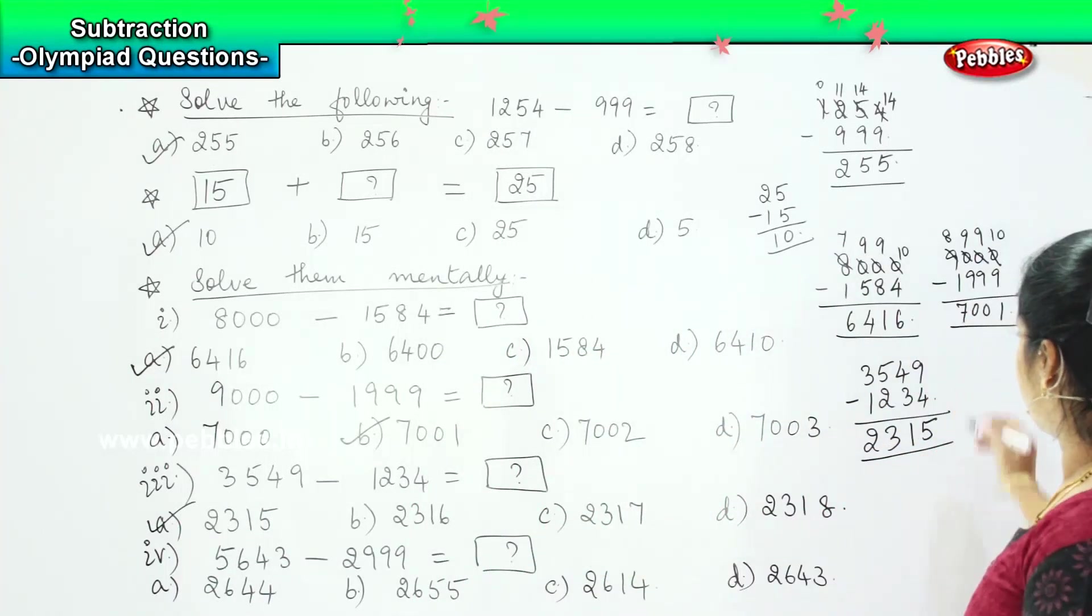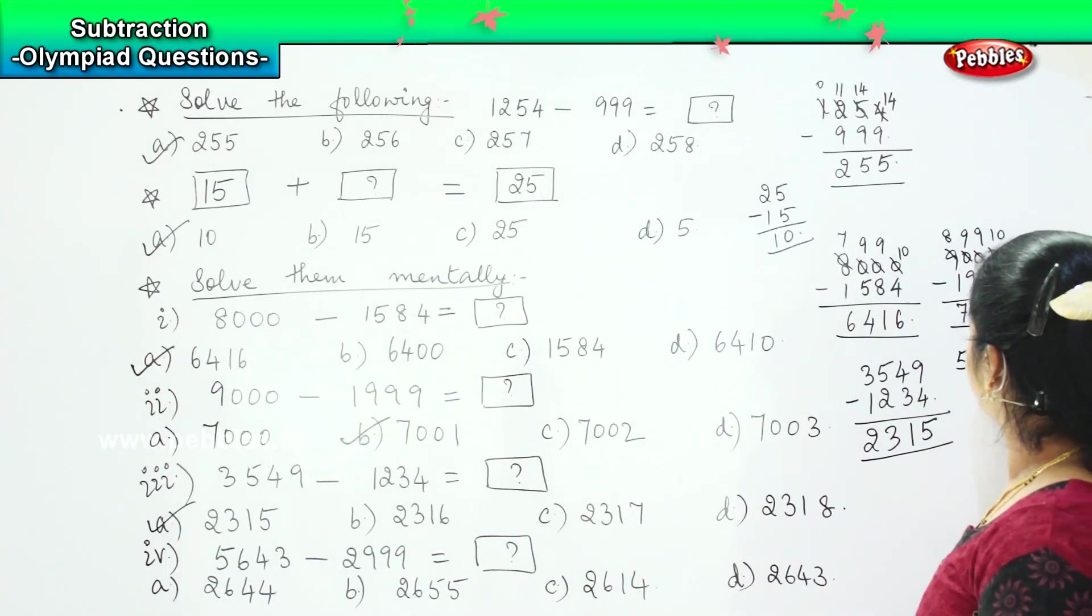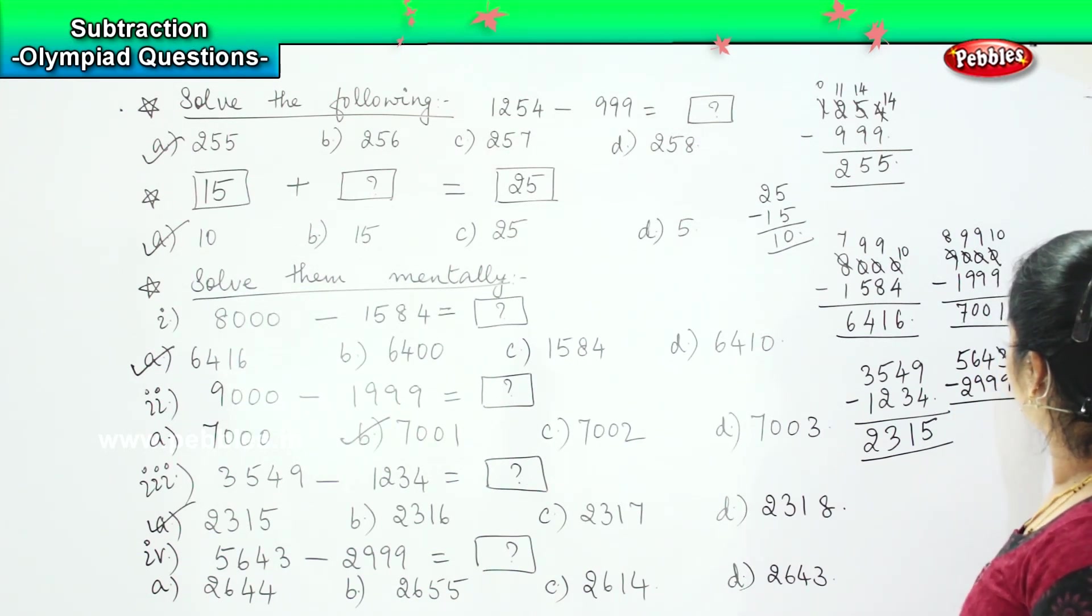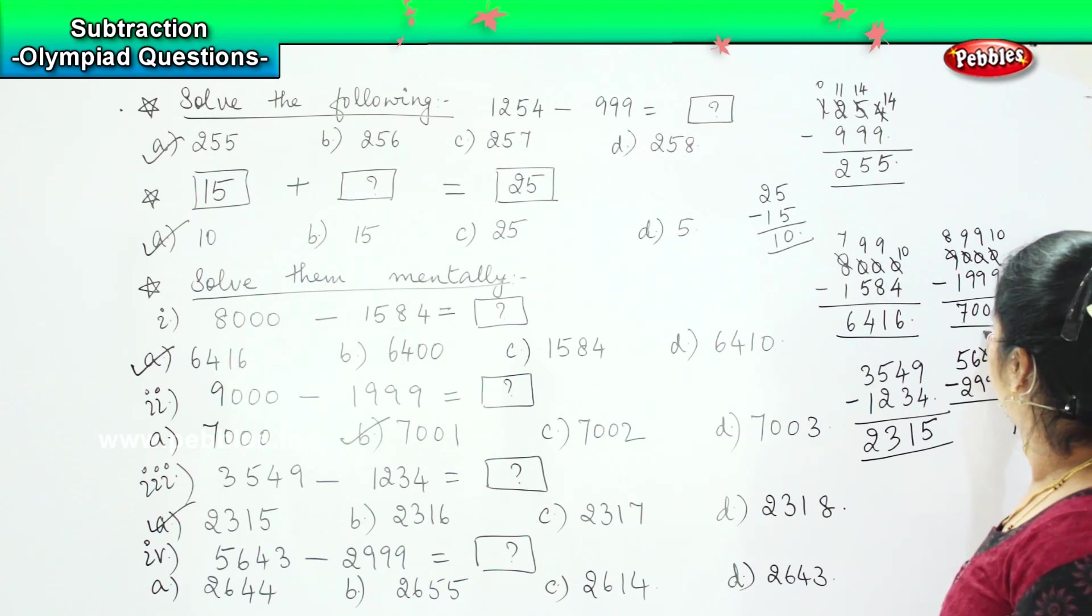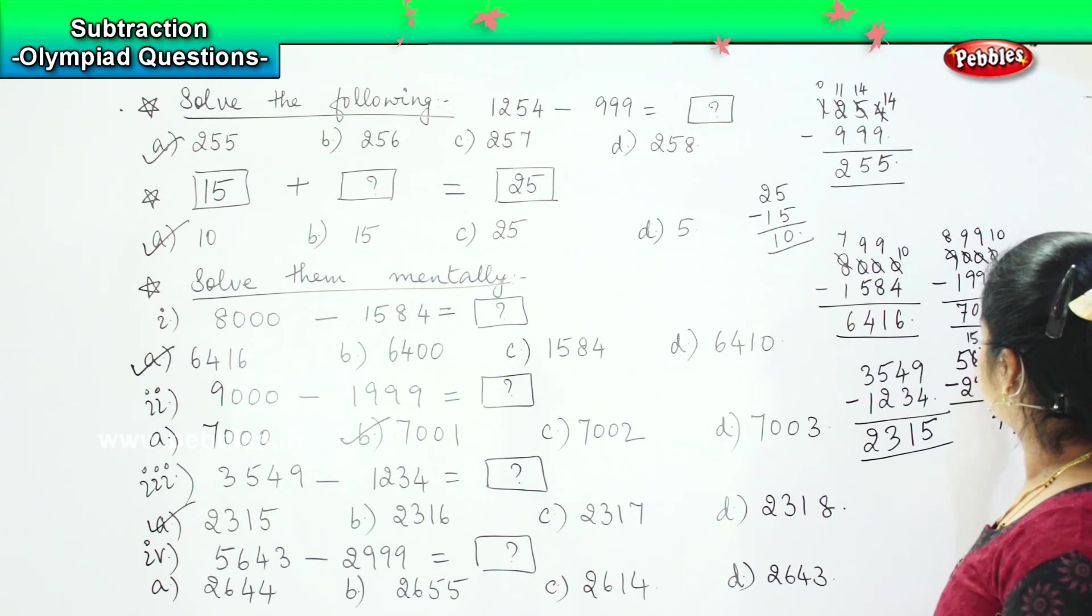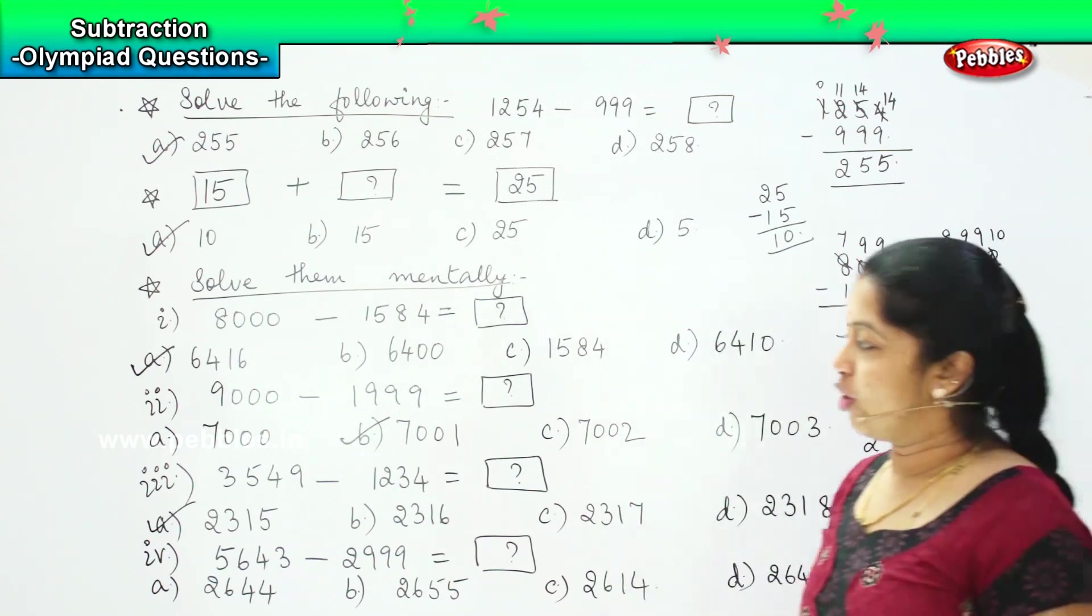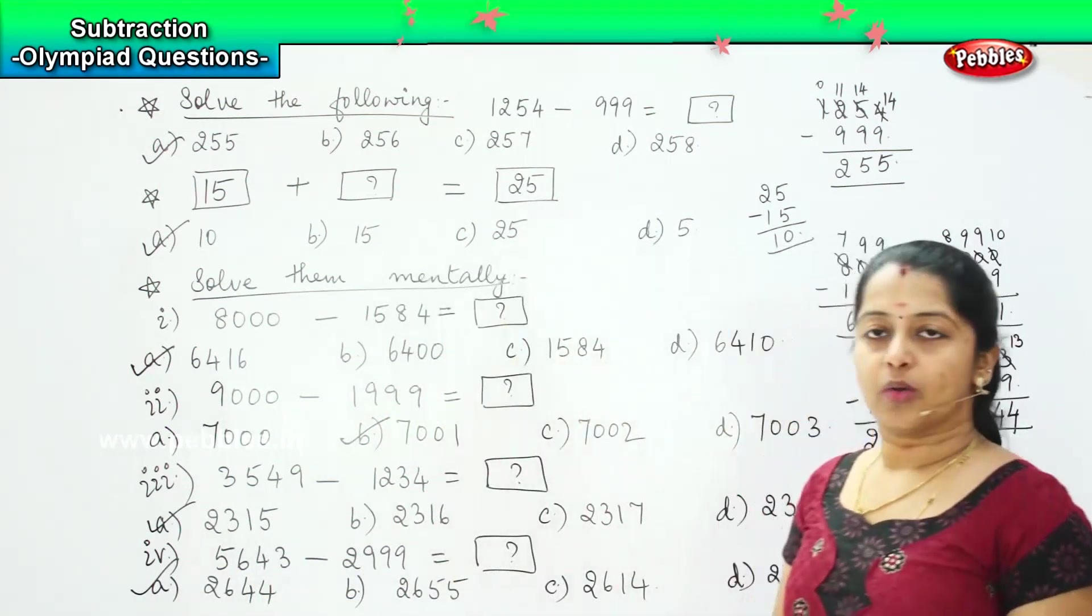Coming to the last one. 5643 minus 2999. So 13 minus 9 is 4. Again, 13 minus 9 is 4. 15 minus 9 is 6. And 4 minus 2 is 2. The answer is 2644. Where did you find it children? That is again option A.